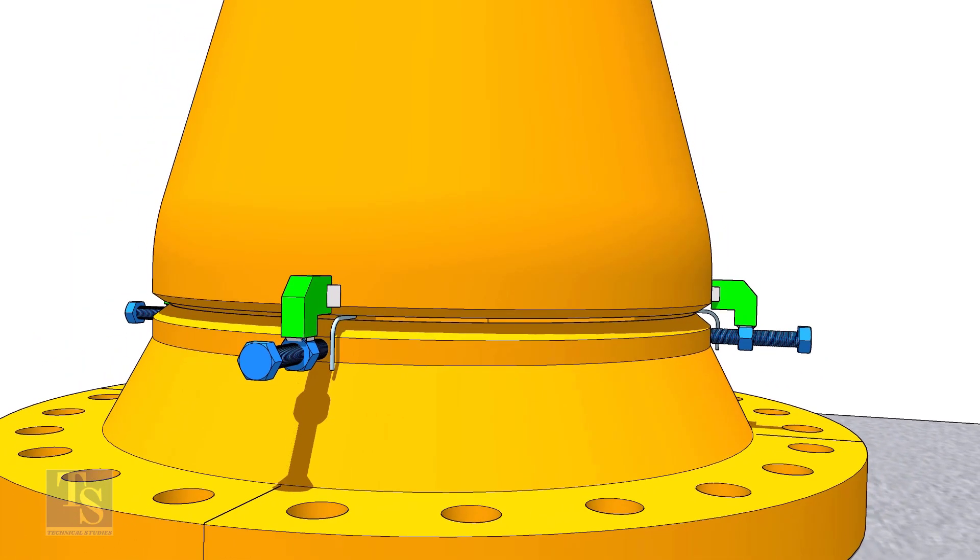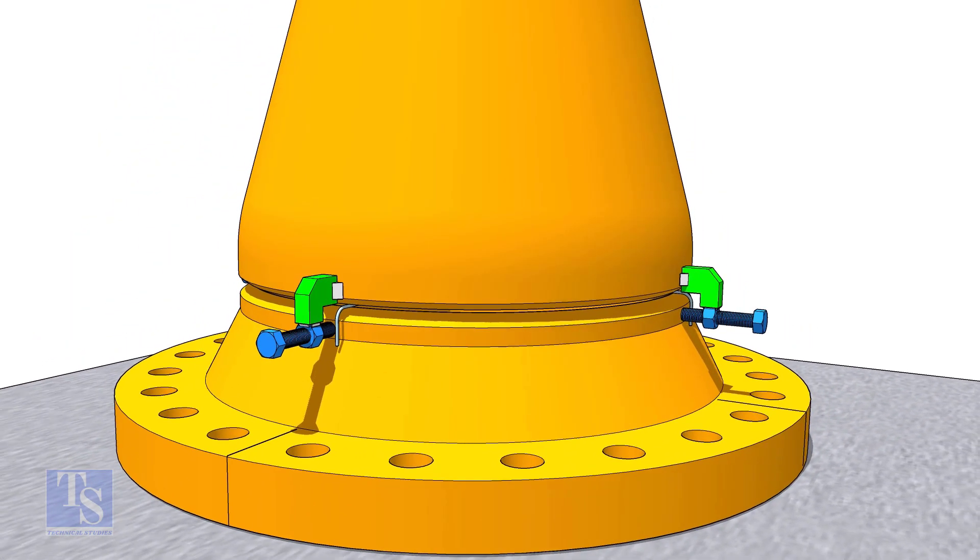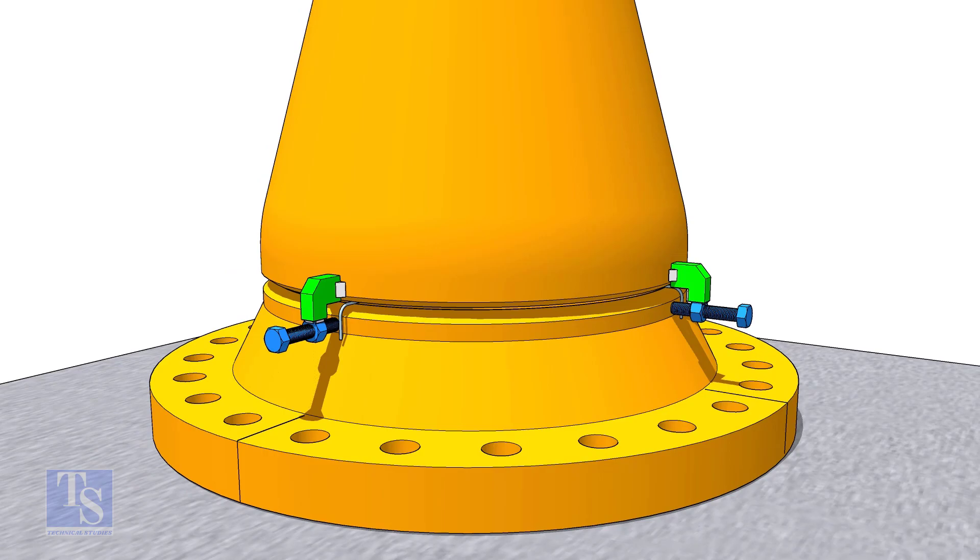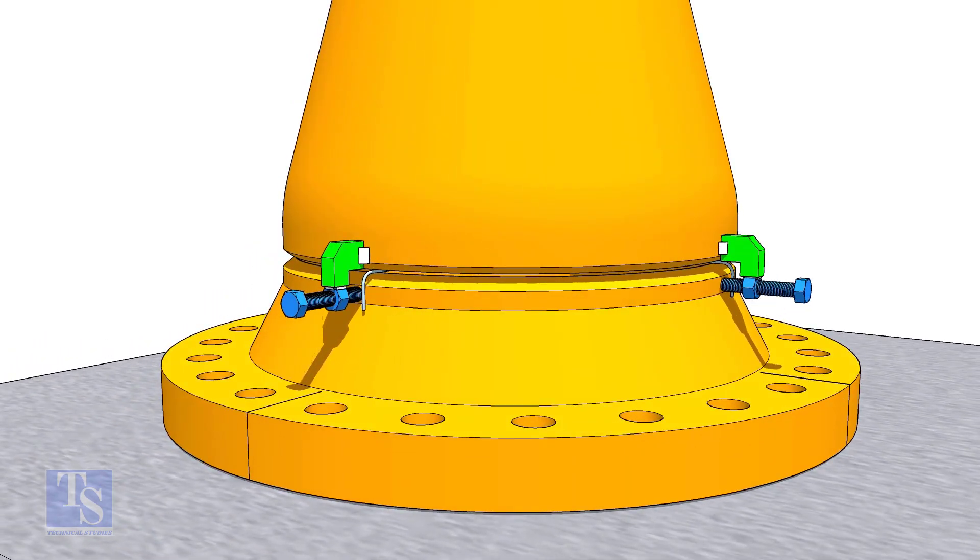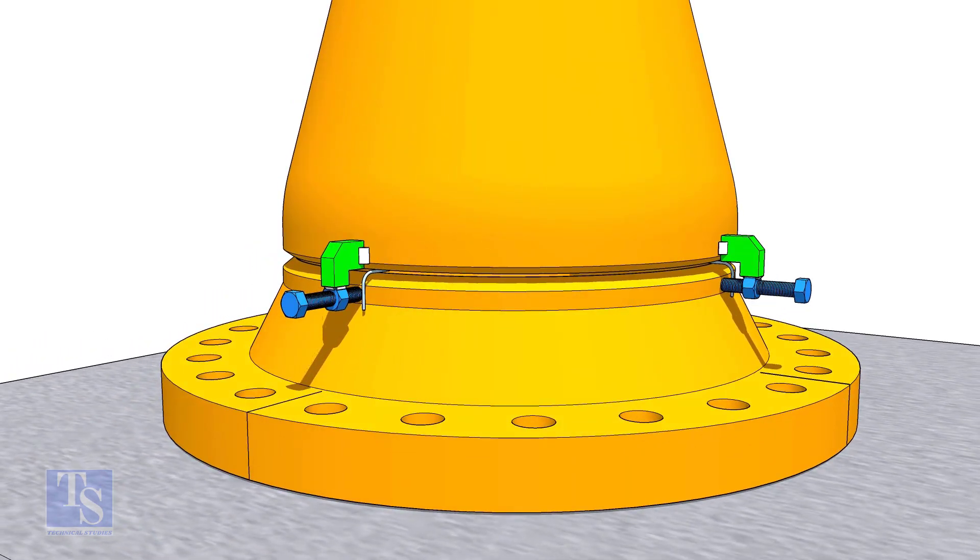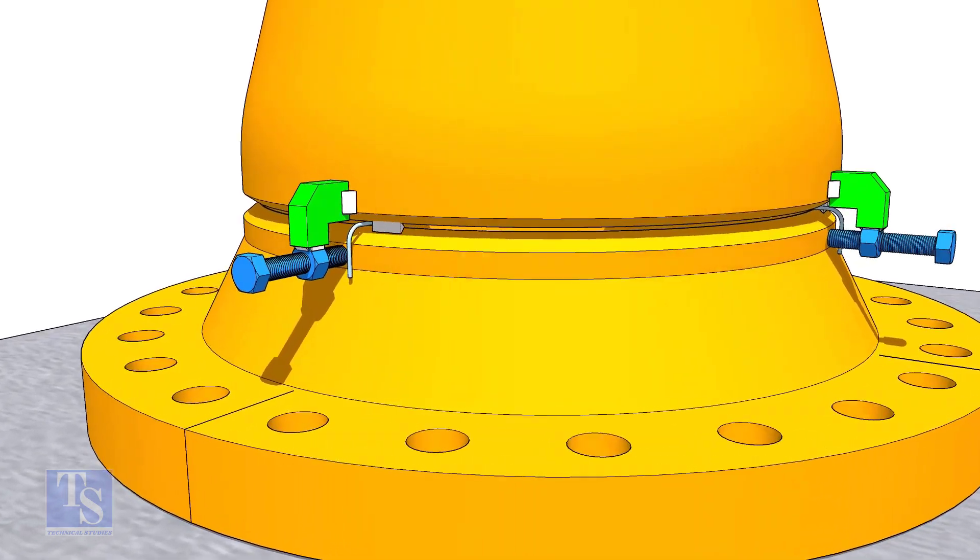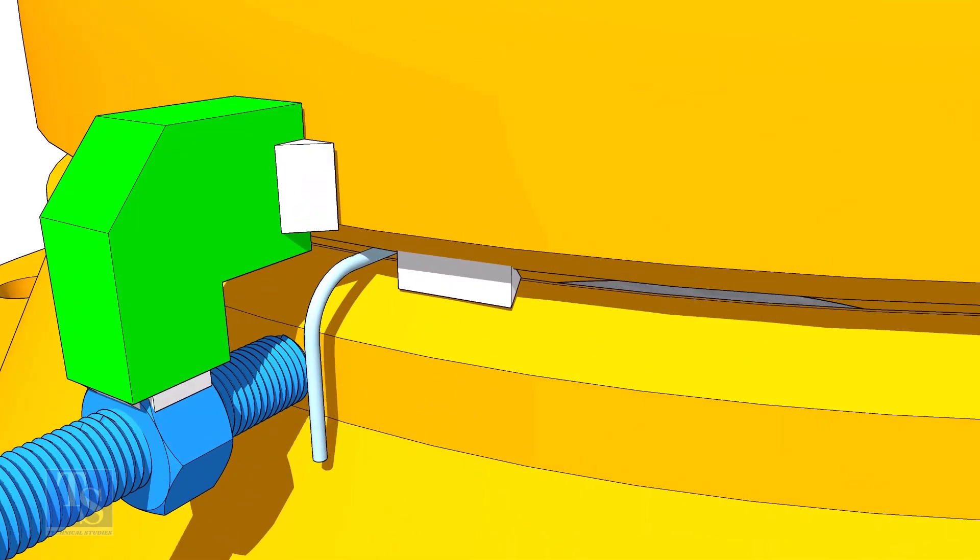Tack weld the jack bolts on the reducer, roughly 90 degrees apart. Tighten the jack bolts until the reducer axis and flange axis are in line. Now, tack weld the flange with the reducer in opposite side sequence, like 0 to 180, then 90 to 270 degrees.